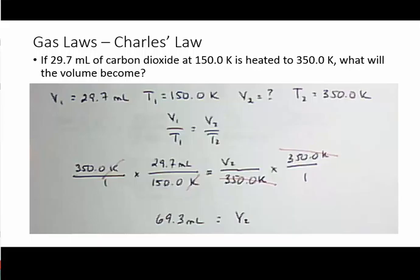One important thing about Charles' Law: you cannot directly solve for a variable on the bottom of a fraction. If the unknown is on the bottom, you must rearrange so the unknown is on top. The easy approach: if you have an unknown on the bottom, just flip both sides of the equation. Whether you flip before plugging in values or after doesn't matter — but you must flip both sides, or the equation is no longer equal.